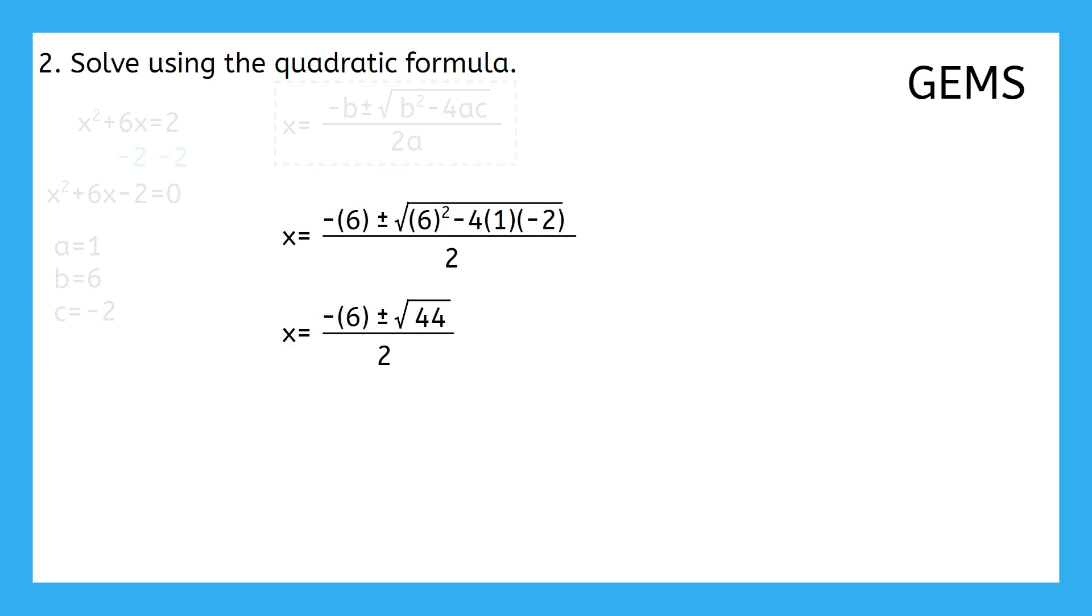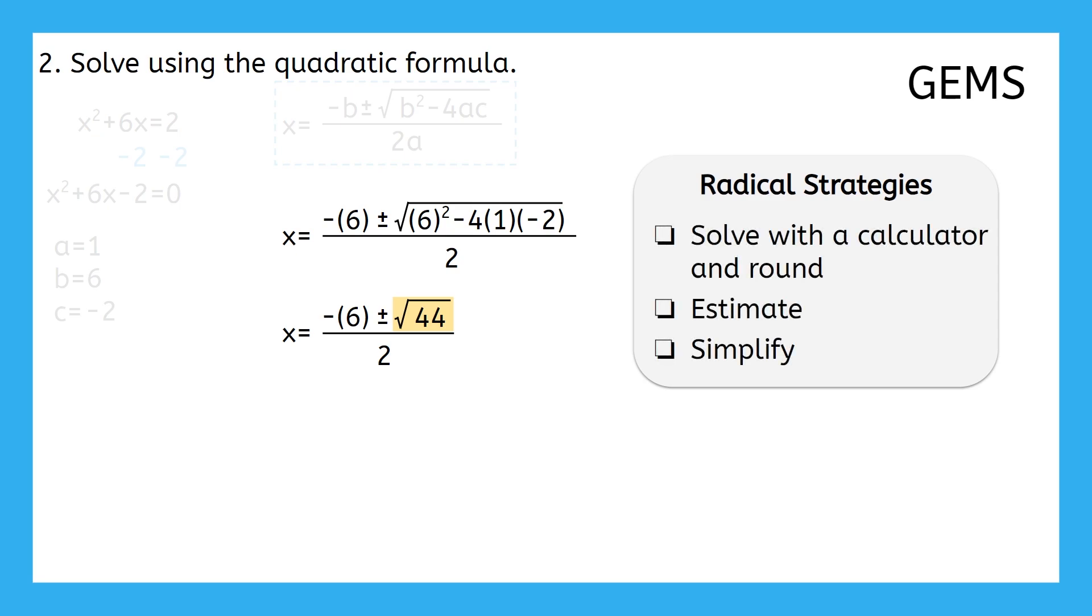This might be, understandably, where you got stuck while working by yourself. 44 is not a perfect square, so where do we go from here? It's been a while since we've worked with radicals. Can you remember any strategies for working with radicands that aren't perfect squares? We could just type it into our calculators, but that's going to give us a number with a never-ending decimal, which would mean we would have to round. So what should we do if we want our answer to be as precise as possible?